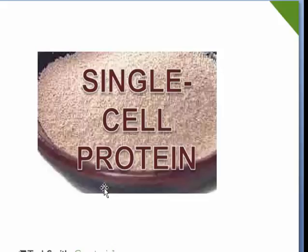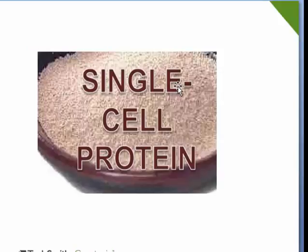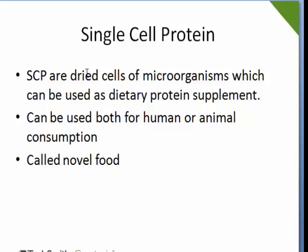Single cell protein is one of the modern inventions of science. It may seem like protein from a single cell, but single cell protein is not the cell of protein. That is microbes — dried microbes. When microbes are dried and processed, these microbes can be used for our protein consumption. The main component of single cell protein is a protein supplement for the human body and animal body. Single cell protein are dried cells of microorganisms.